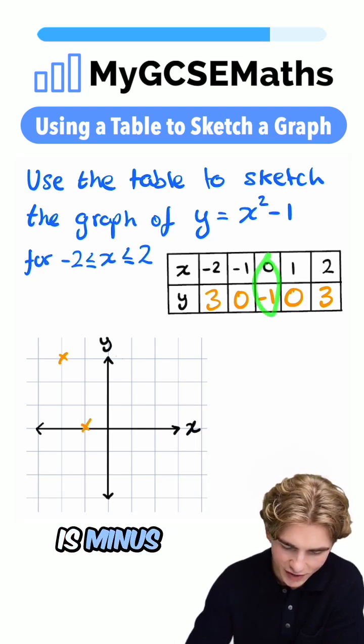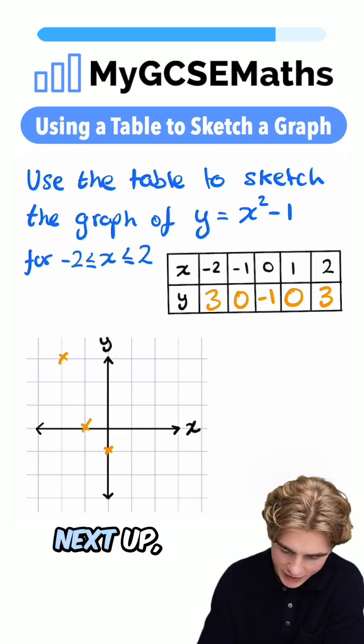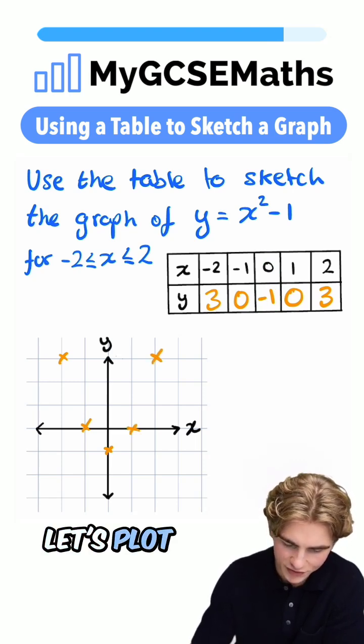Next up, when x is zero, y is minus one. We're going to have zero minus one. Next up, one zero. Let's plot that on. And two, three. Let's plot that on.